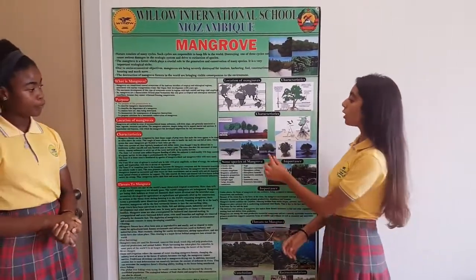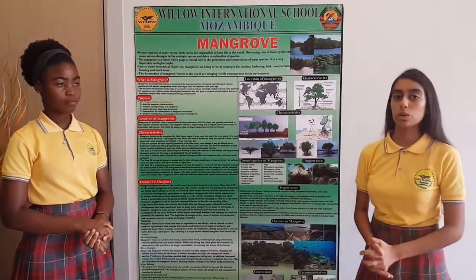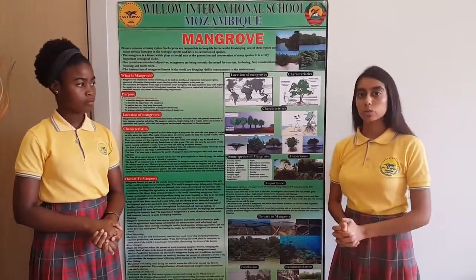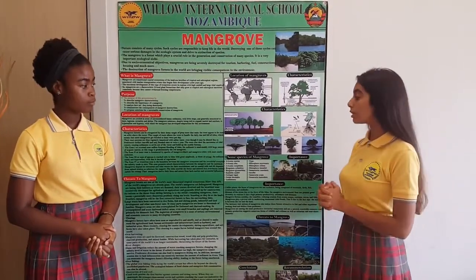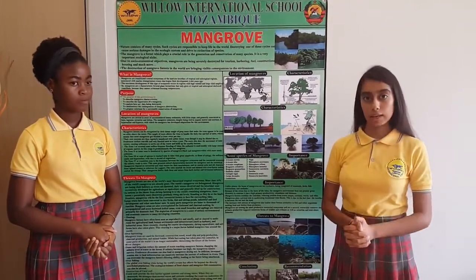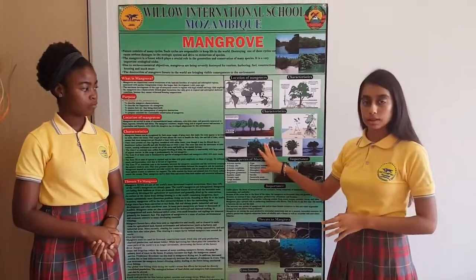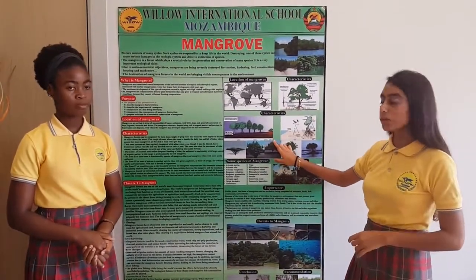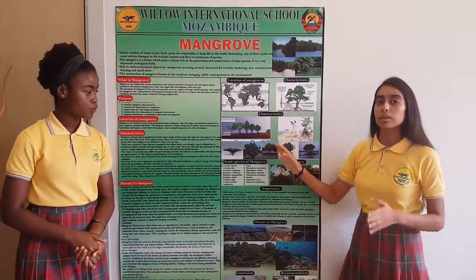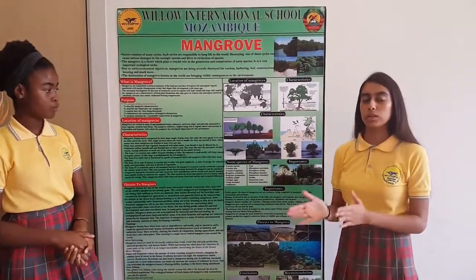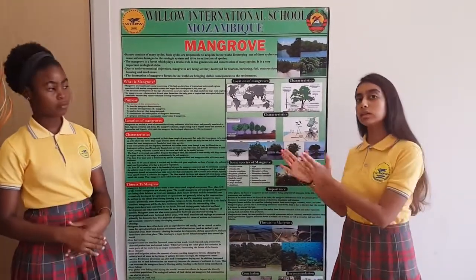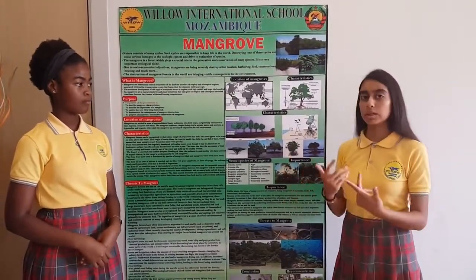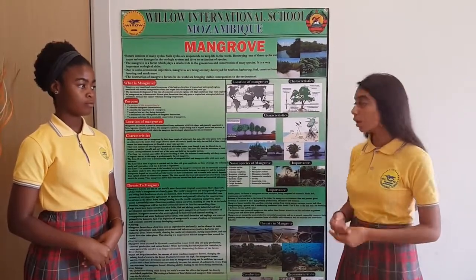Then we have the third zone, which is the zone of apricum. It is only reached by tides with great amplitude. Here the sediment is sandy and they are hypersaline. And finally we have the fourth zone, which is the transition zone. It is a boundary between the mangrove ecosystem and the terrestrial ecosystem, having mixed characteristics between both. An important factor is that the salinity here tends to zero.